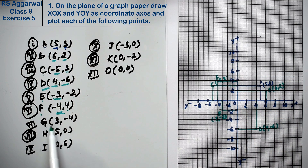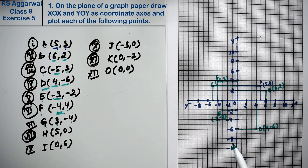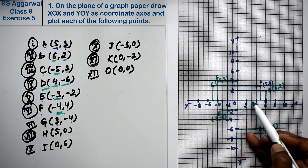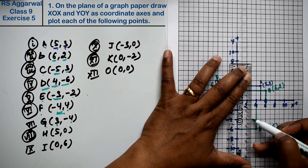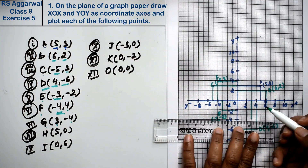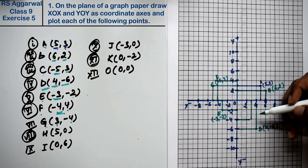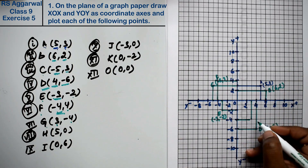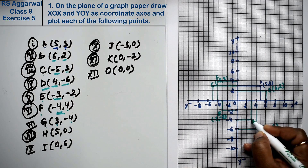Next is point G: x is 3 and y is minus 4. This places it in the fourth quadrant where x is positive and y is negative. So this is point G at (3, -4).